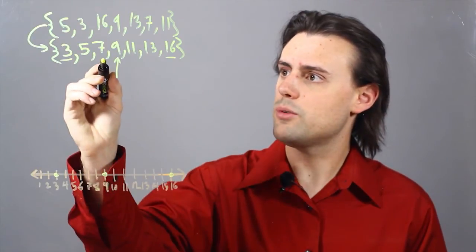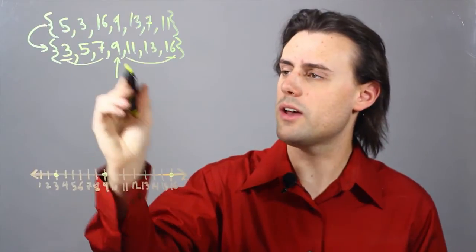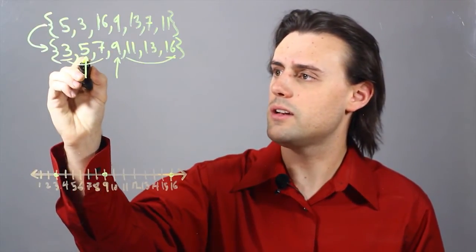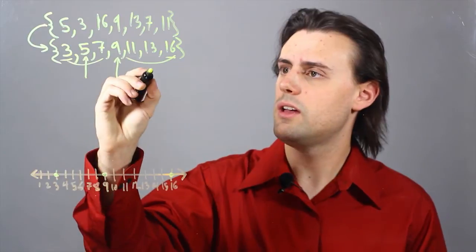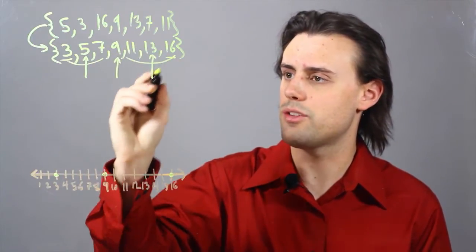And then, I have to identify the quartiles on either side of the median. On the left-hand side, it's going to be 5, and on the right-hand side, the median for this set is 13.